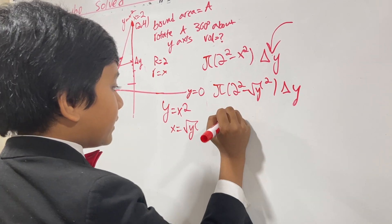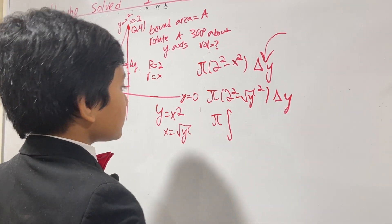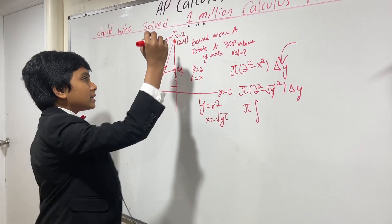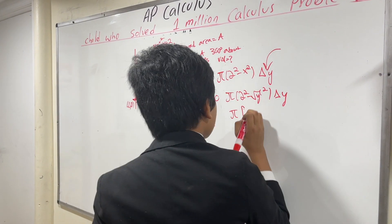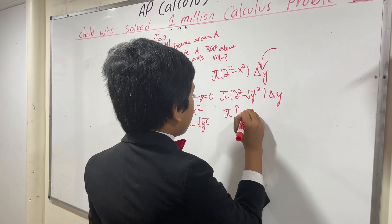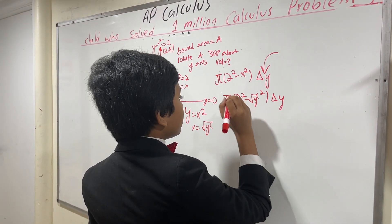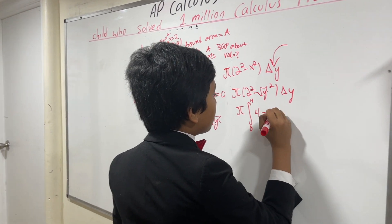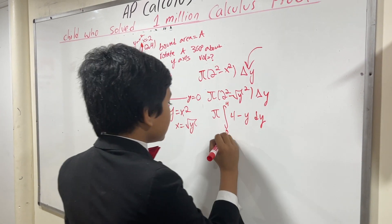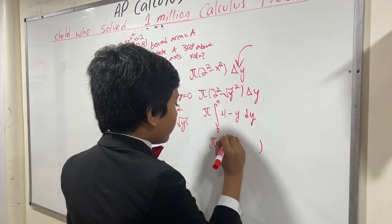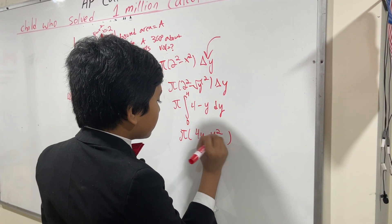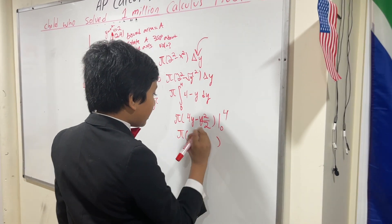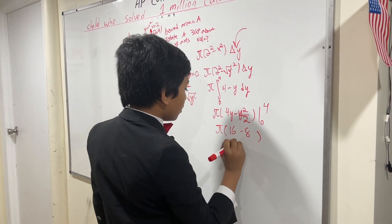Now we simply take the integral of this. Since we're differentiating with respect to Y, what is Y min? Zero. What is Y max? Four. So we're going to have Pi, from 0 to 4, of (4 minus Y) dY. That's a fairly standard integral — we have 4Y minus Y squared over 2, from 0 to 4. Plugging in 0 gives 0, so this is just Pi times (16 minus 8), or 8 Pi.